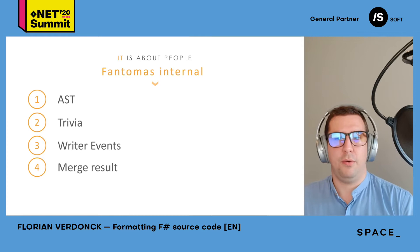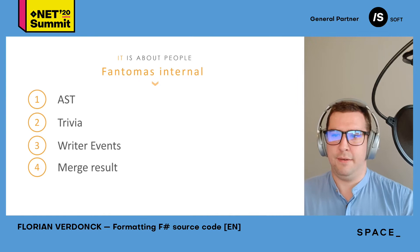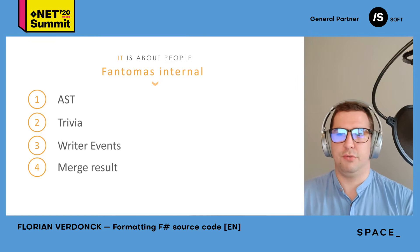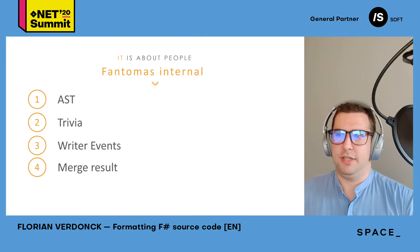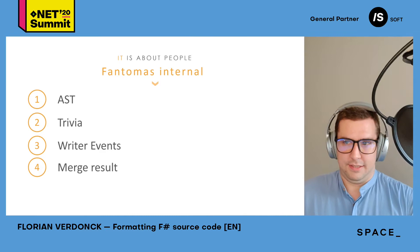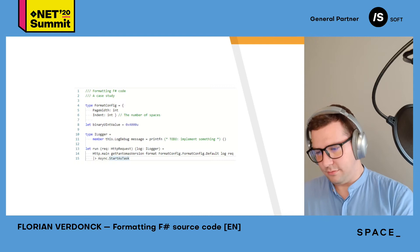There are four main building blocks when transforming source code to formatted code. We create the abstract syntax tree using the NuGet package. We then create something called trivia. We transform both of these to writer events and merge them back together until we have the formatted code. It doesn't exactly happen in that order, but that's the main idea.